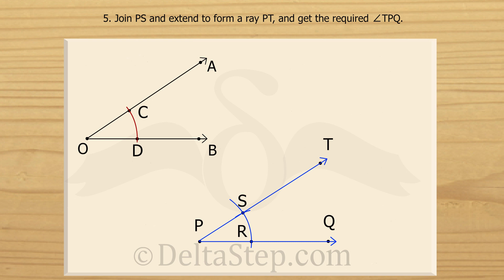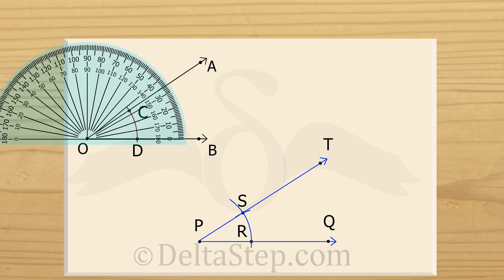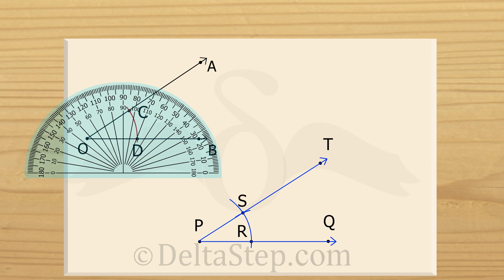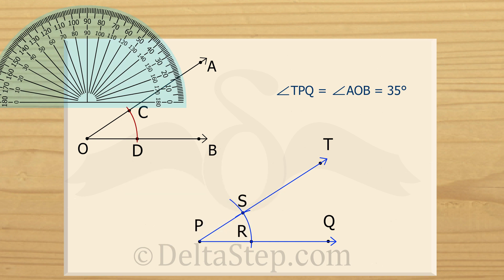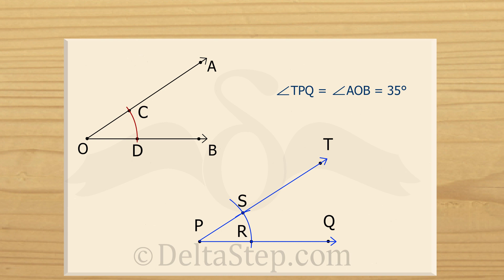We have now formed another angle TPQ, which is also angle SPR. If you measure the two angles using a protractor, you will find that angle AOB equals 35 degrees and angle TPQ also equals 35 degrees. So both angles are equal, and this is how we construct an angle equal to a given angle using a ruler and a compass.